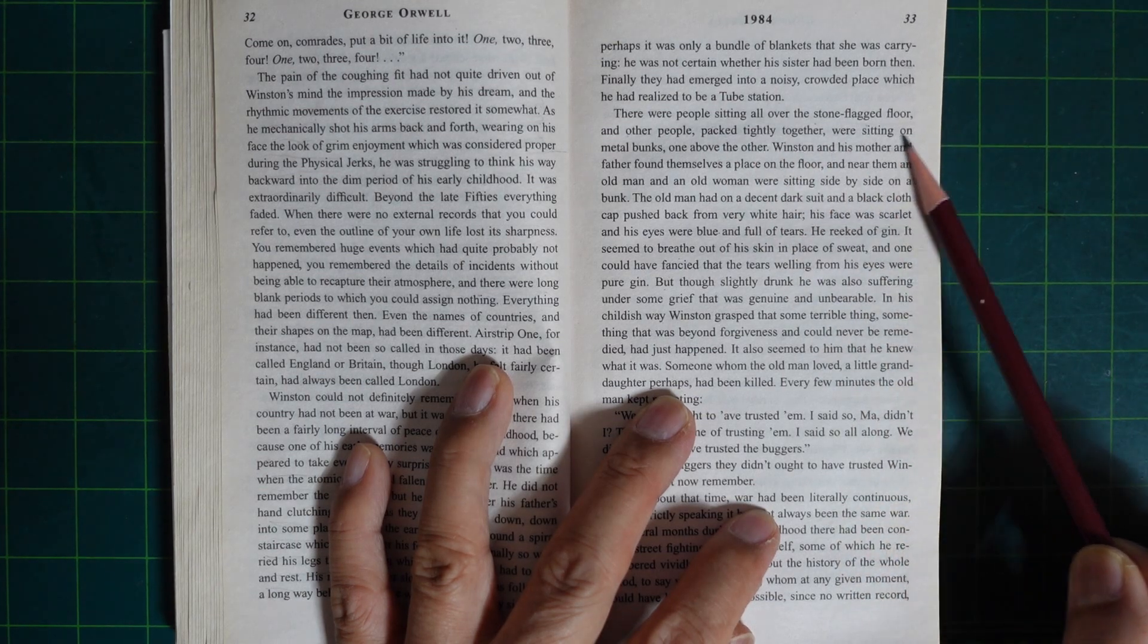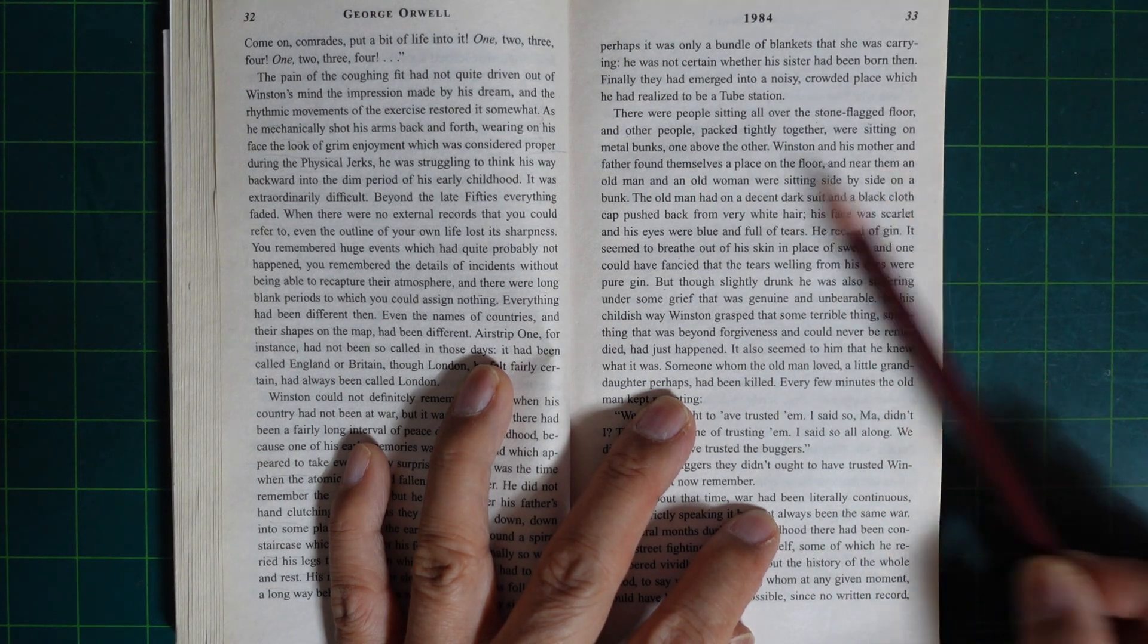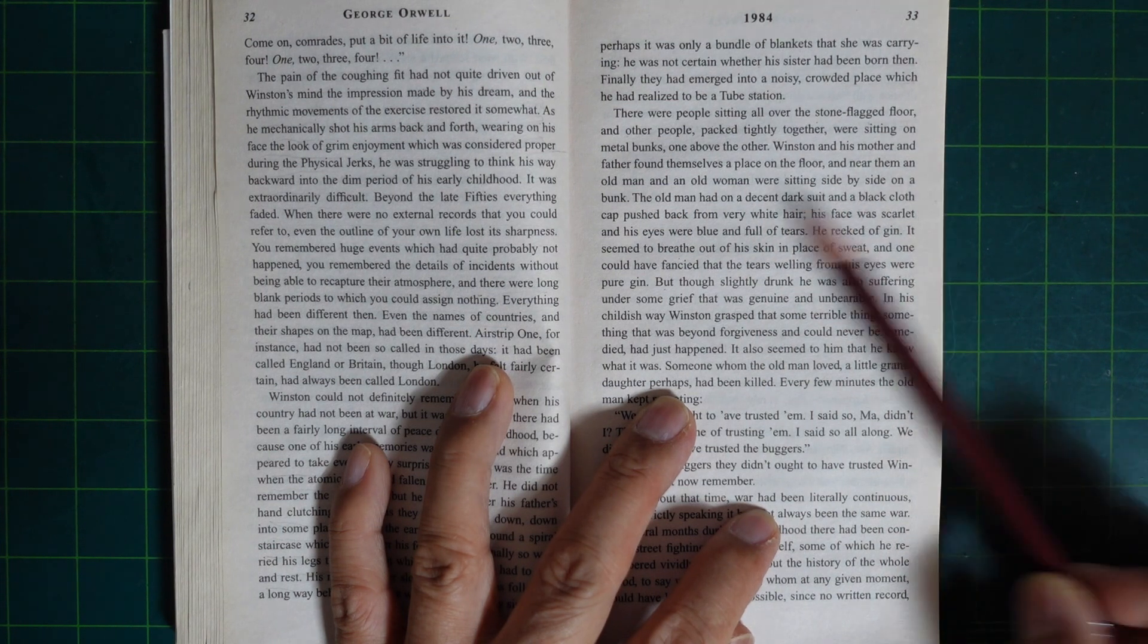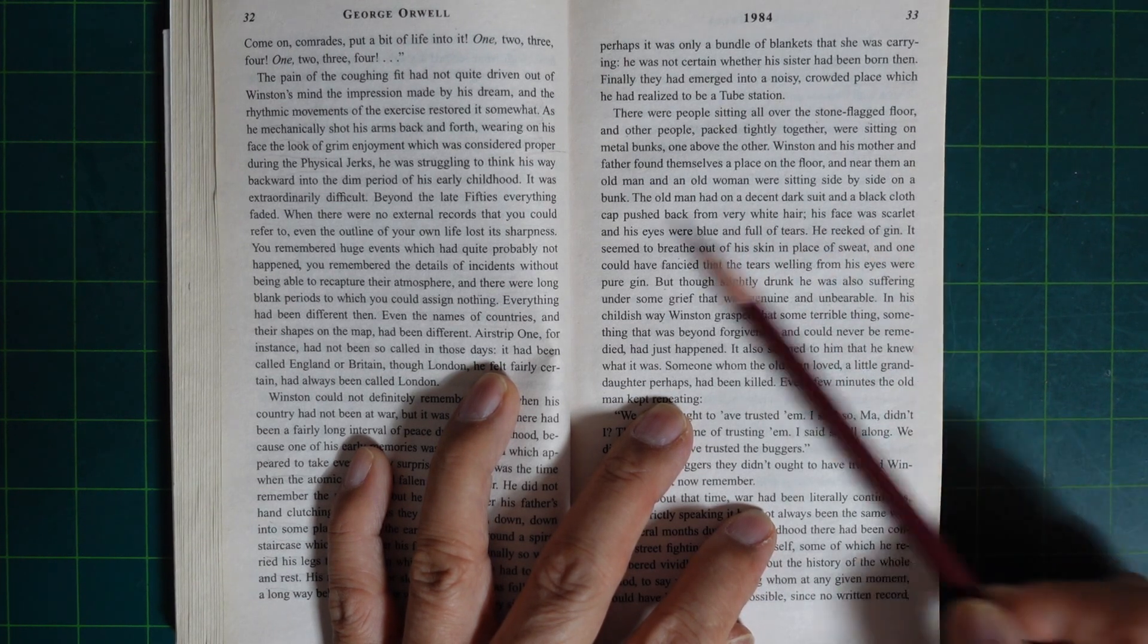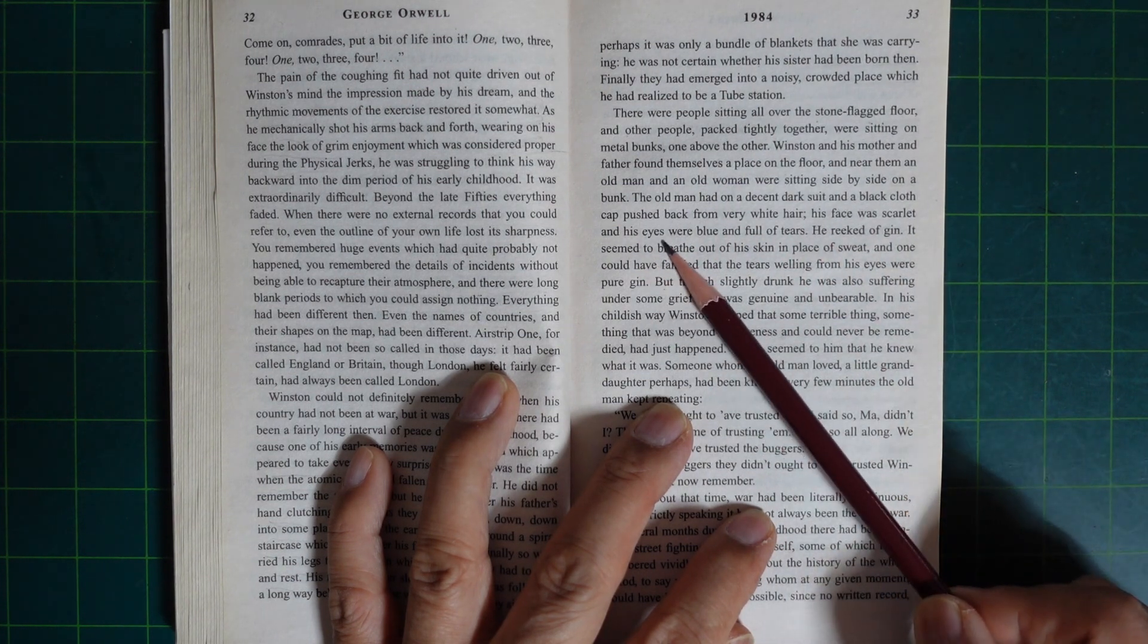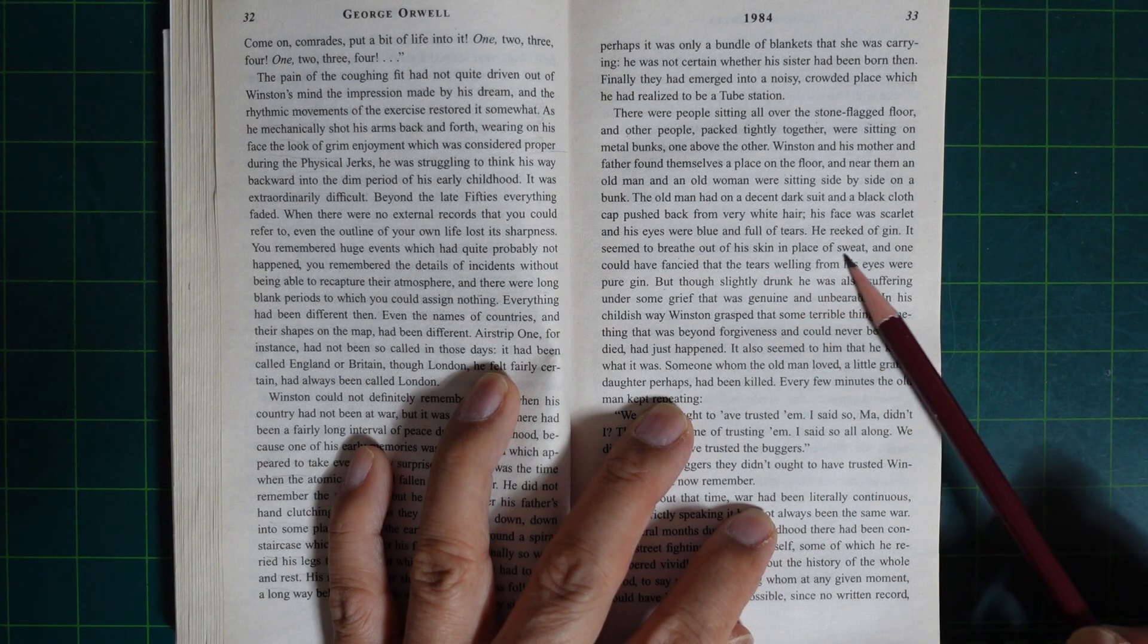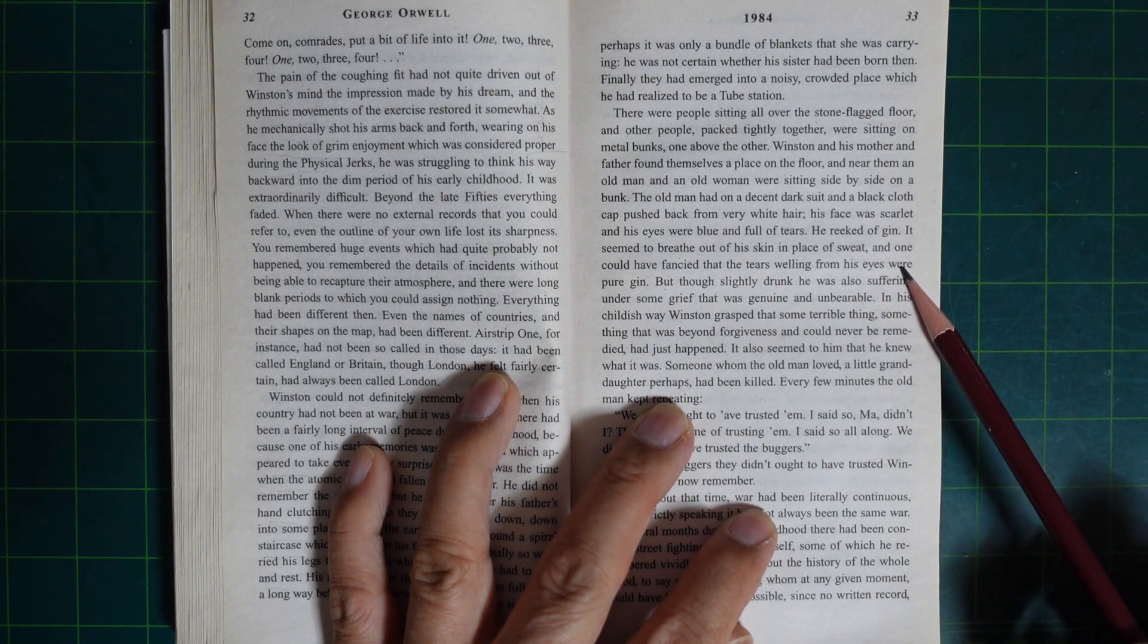Packed tightly together, were sitting on metal bunks one above the other. Winston and his mother and father found themselves a place on the floor, and near them an old man and an old woman were sitting side by side on a bunk. The old man had on a decent dark shirt, and the old woman kept pushed back from their white hair. His face was scarlet, and his eyes were blue and full of tears. He reeked of gin. He seemed to breathe it out of his skin in place of sweat, and one could have fancied that the tears welling from his eyes were pure gin. But though slightly drunk, he was also suffering under some grief that was genuine and unbearable.